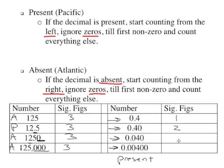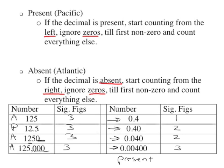Let's see if you can get the next two on your own. Present or absent — the decimal is present. Start from the left, ignore the first two zeros, and count: one, two. Present or absent — present. Start from the left, ignore zeros: one, two, three. All those leading zeros can be ignored, then count everything else. So there are two sig figs and three sig figs.